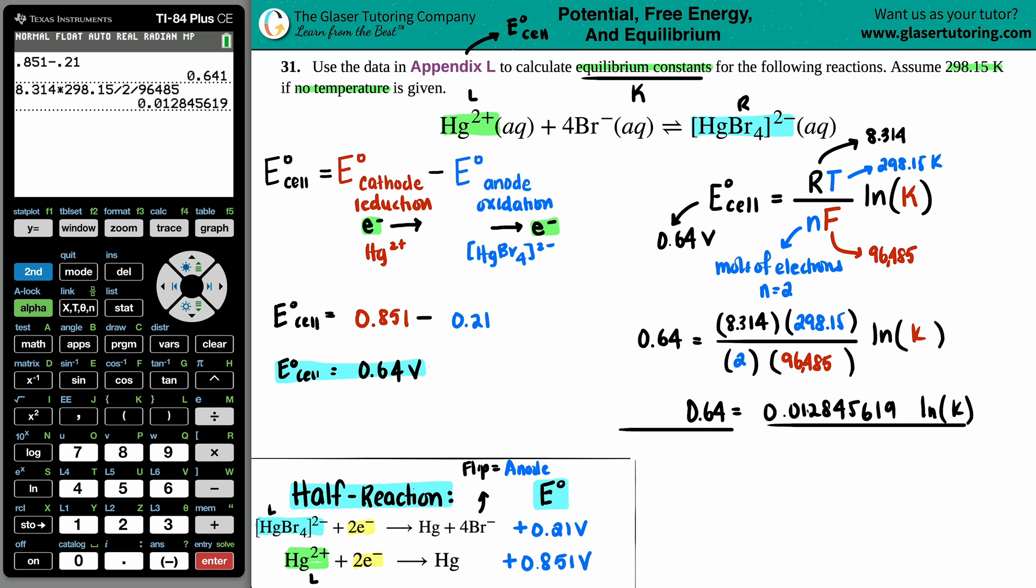Get the natural log of K by itself. We're going to divide by that number, 0.012845619 on both sides. This cancels out. So this is going to equal to ln of K. And I'm just going to say 0.64. I'm going to go up and grab that value. Press enter.